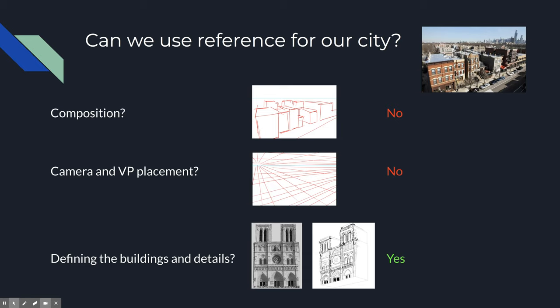You cannot use a photograph for your composition — where things go, how big they are, how you place them. You must build that from scratch using your thumbnails. We're not drawing cities; these are just forms in 3D space. If you're trained in perspective, this should be easy. You also cannot copy your vanishing point placement, because that shows you don't understand why you placed vanishing points where they are.